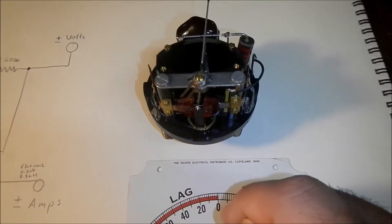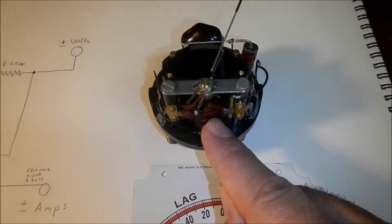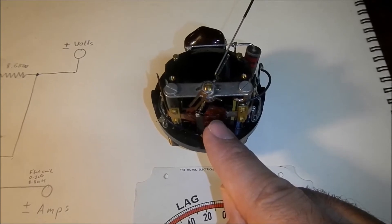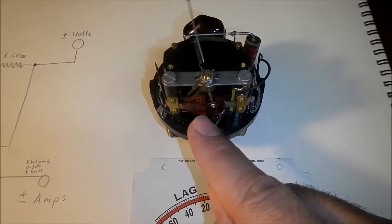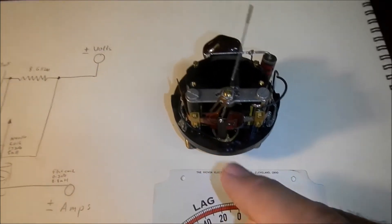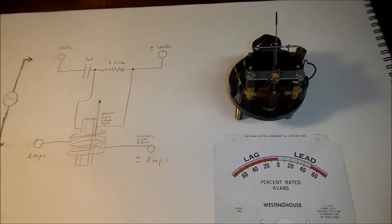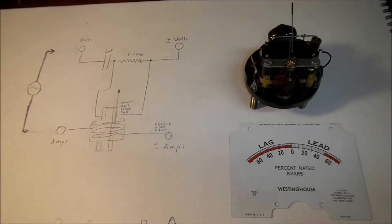So if the current is leading it'll deflect one direction. If it's lagging it'll deflect the other direction. And I just want to share with you the internal schematic of the meter as well.